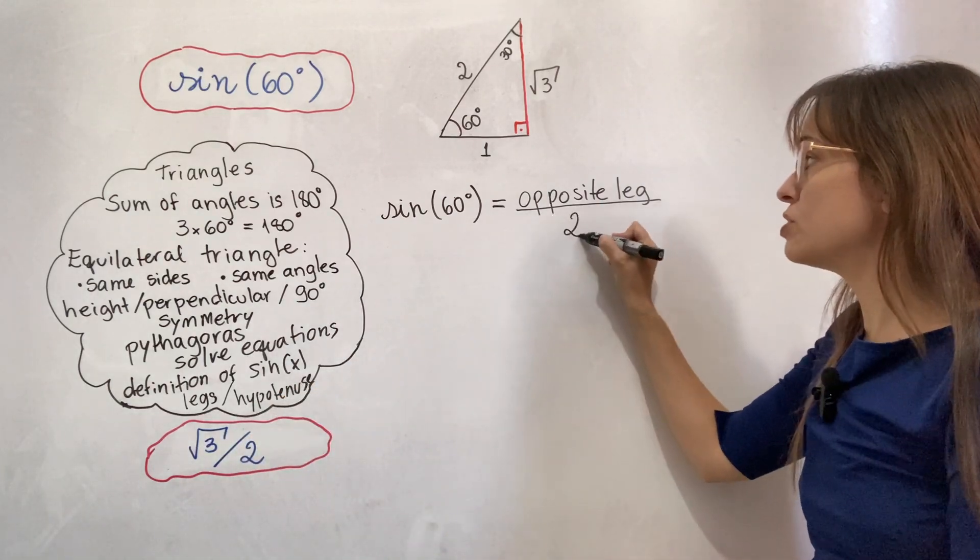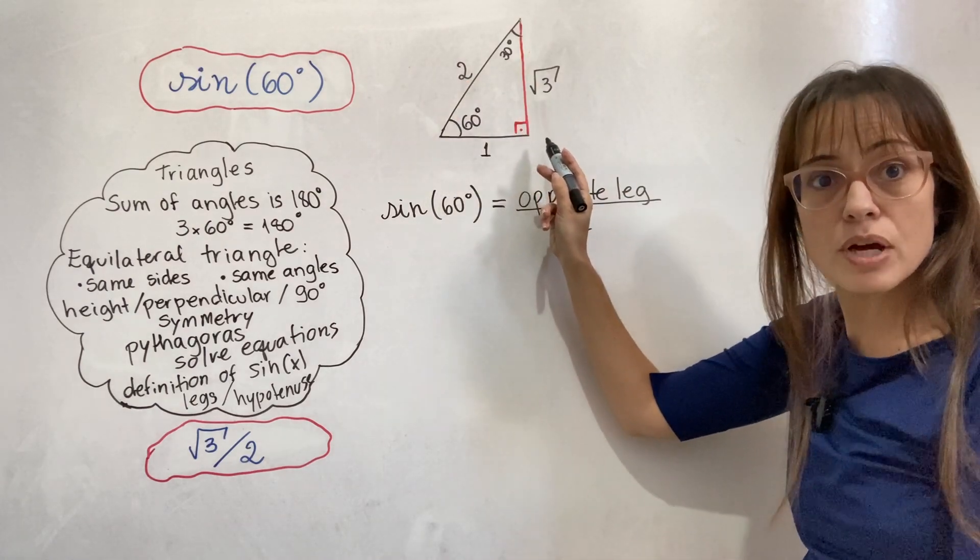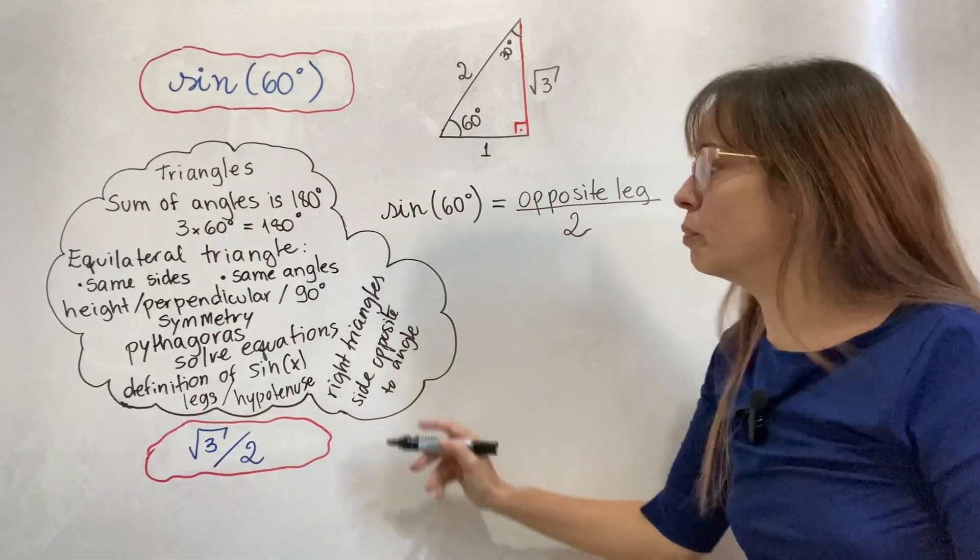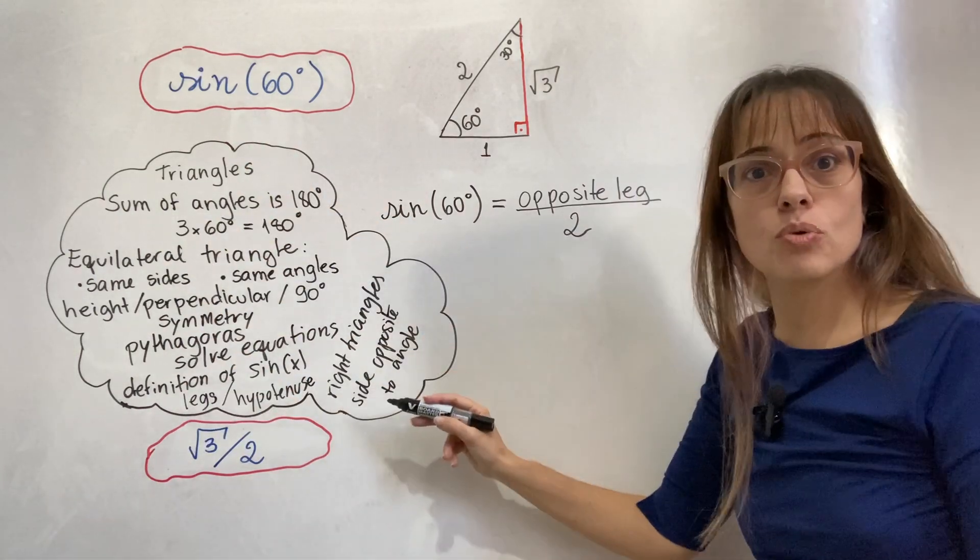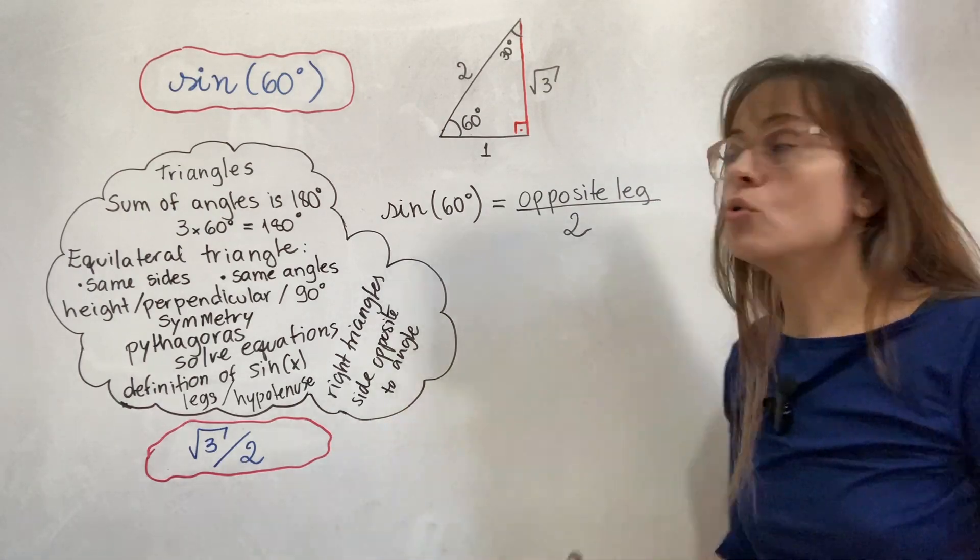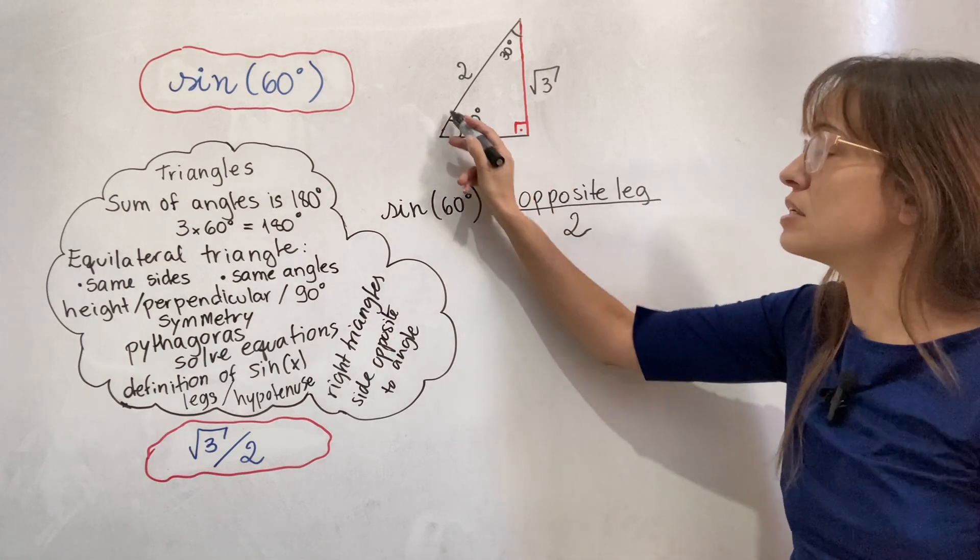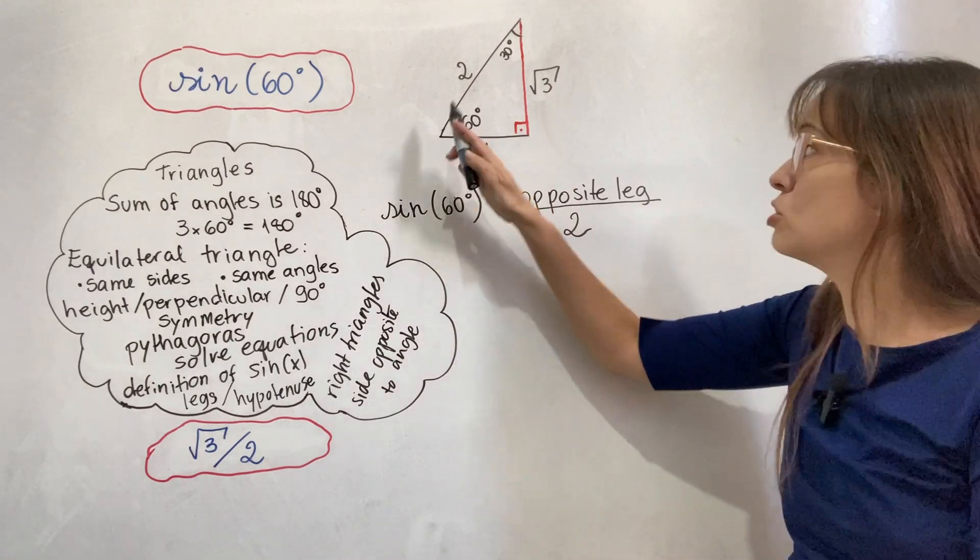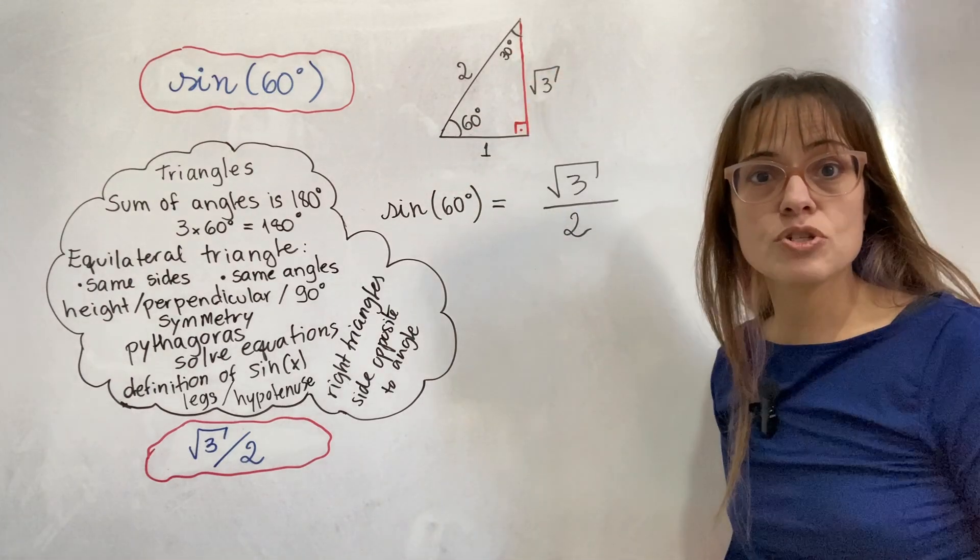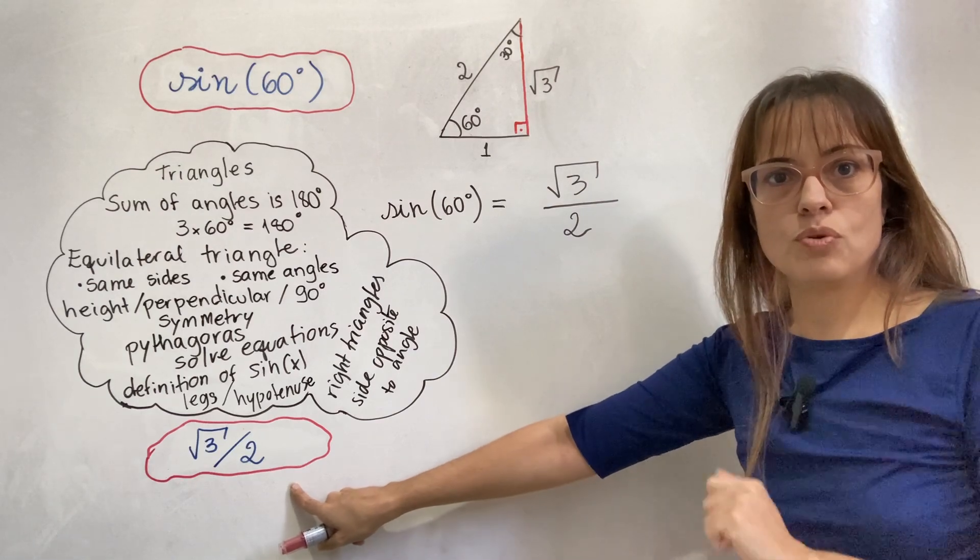And I'm running out of space to write down all of the things that I know. But I do know what right triangles are. And I know about the concept of a side being opposite to an angle, which I'm also going to need here because I need the leg that is opposite to the 60 degrees. So I need to know that it's this one and not this one. So there's your answer. The sine of 60 is the square root of 3 over 2.